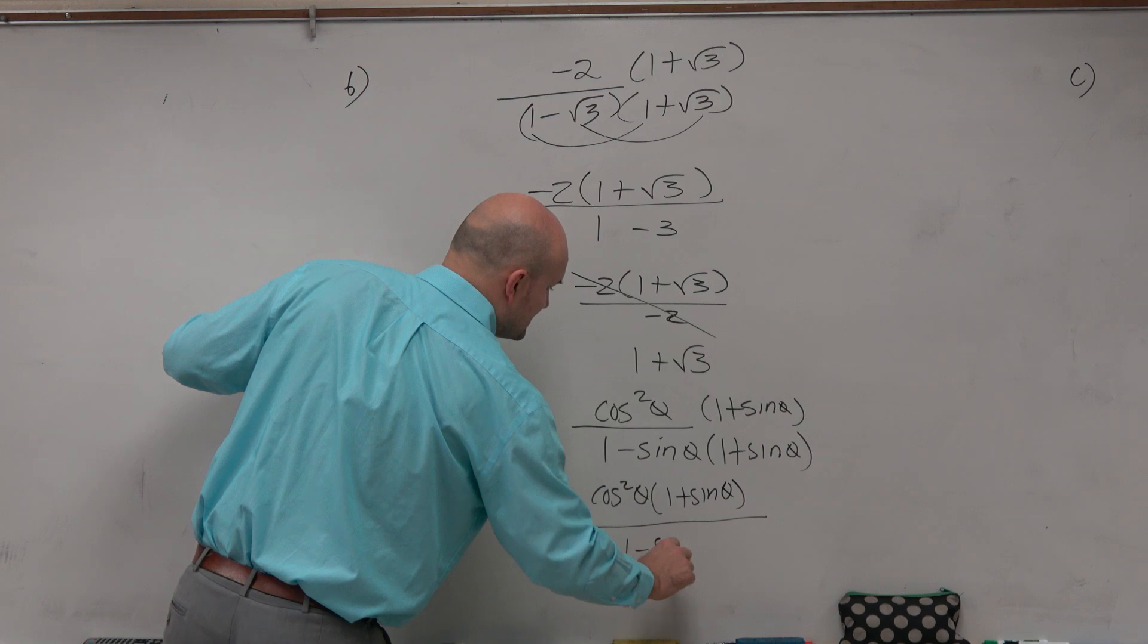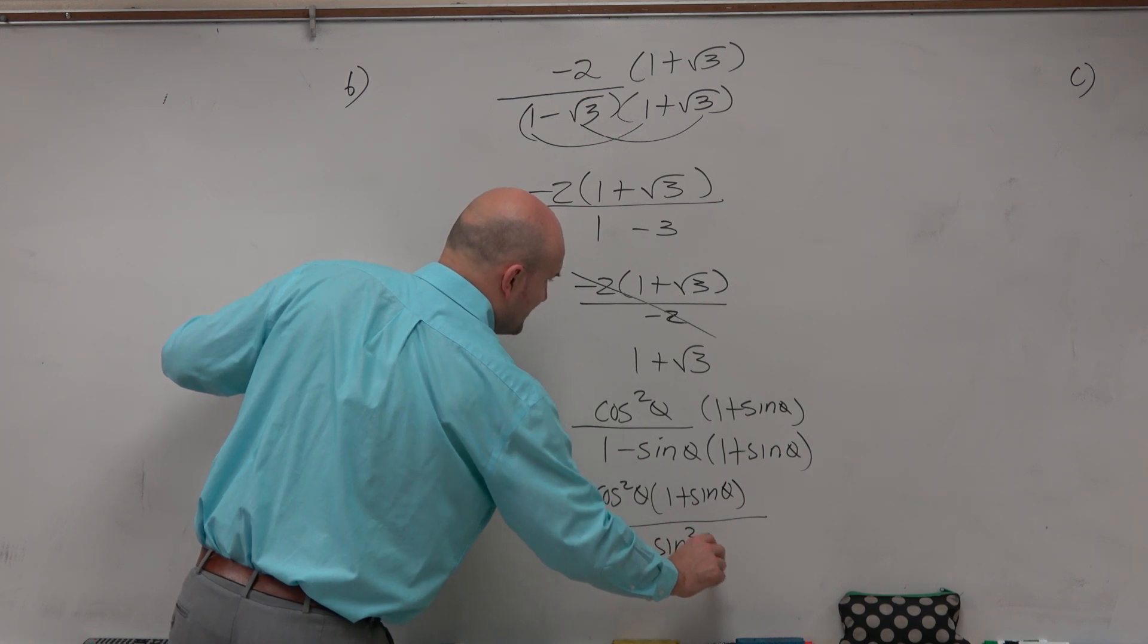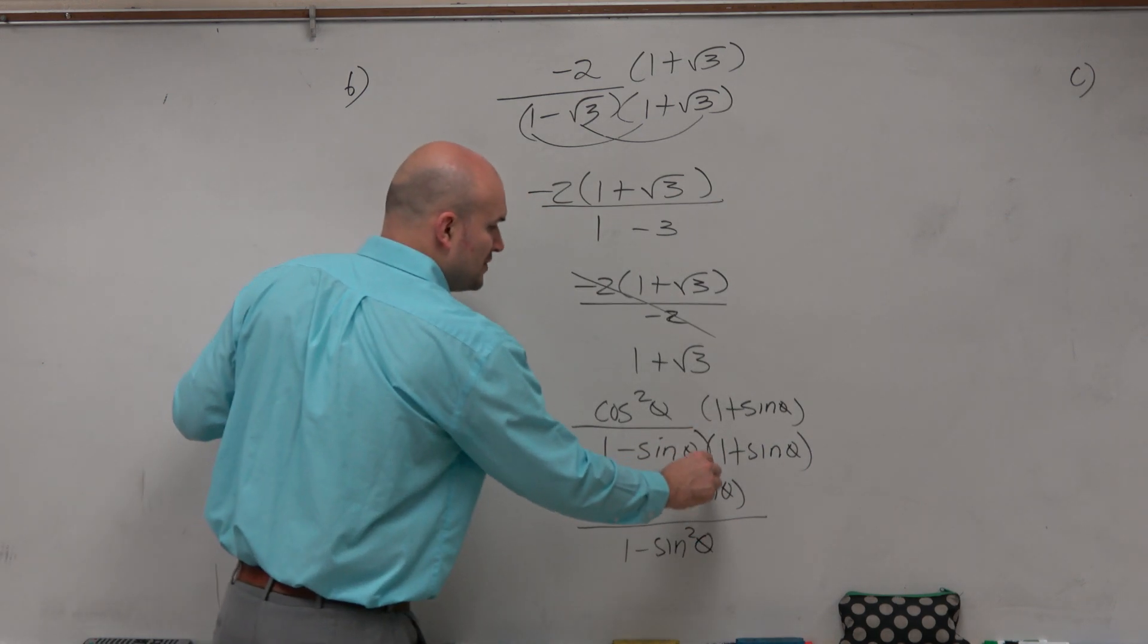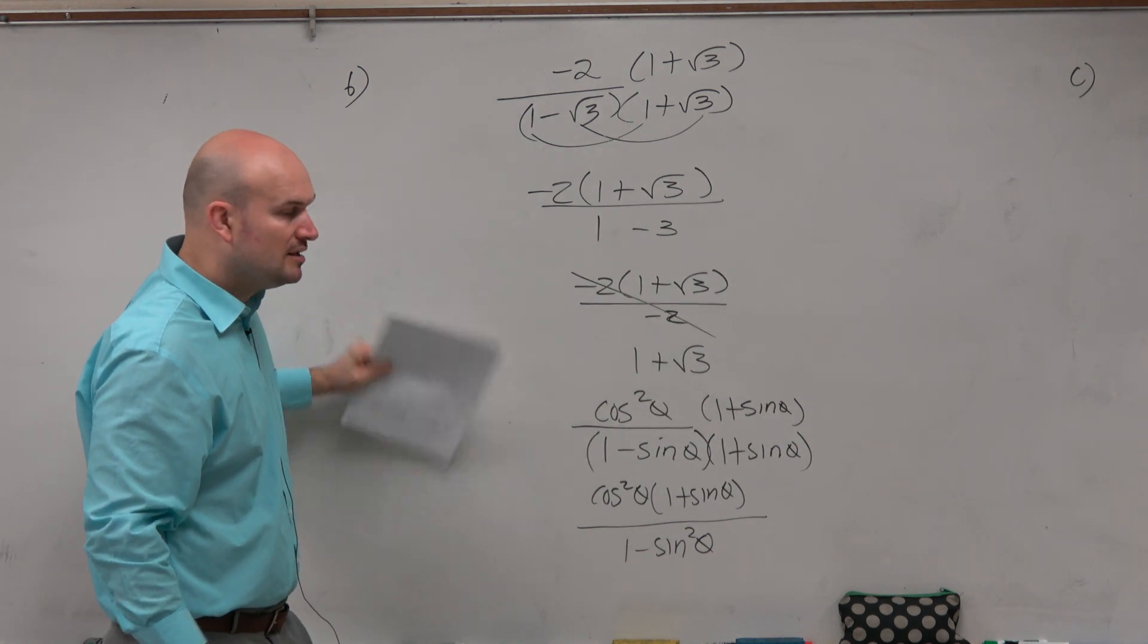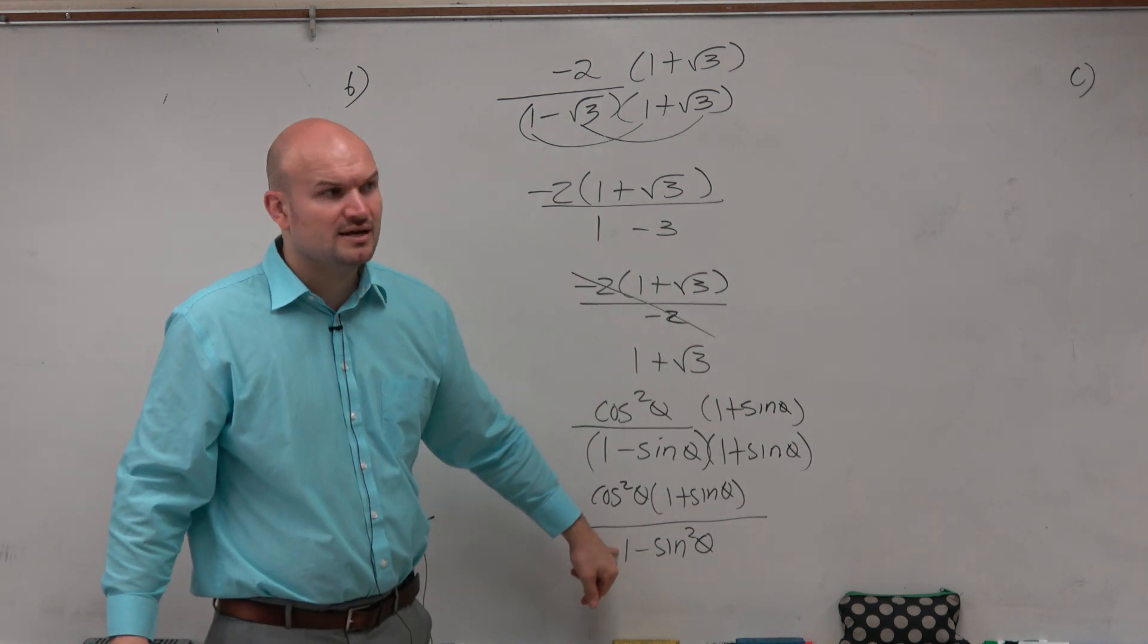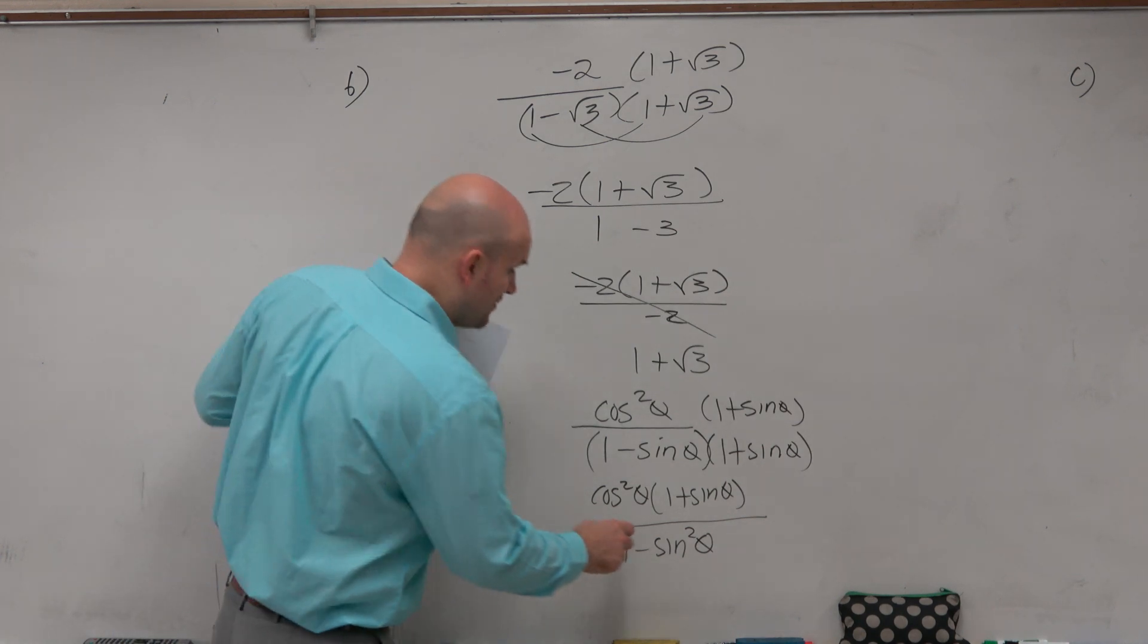We get 1 minus sine squared of theta by applying the difference of two squares. 1 minus 1, and then negative sine of theta times sine of theta. What is 1 minus sine squared of theta? Cosine squared.